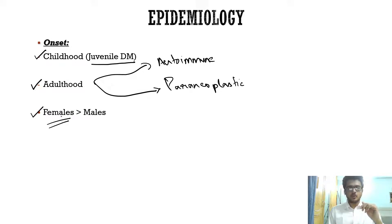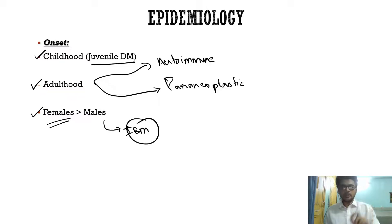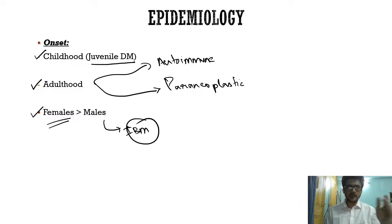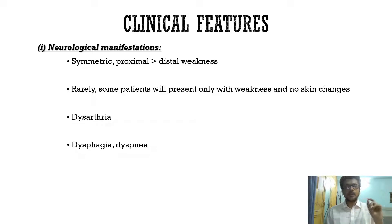Like any other autoimmune disorder, dermatomyositis is more common in female patients compared to males. The inflammatory myopathy that is more common in males is inclusion body myositis. So inclusion body myositis is more common in males, whereas dermatomyositis and polymyositis are more common in female patients.